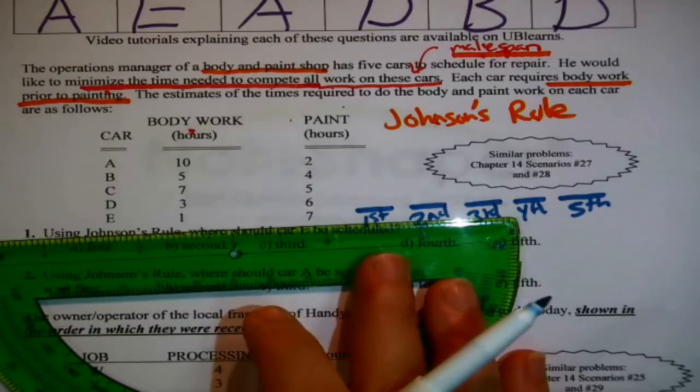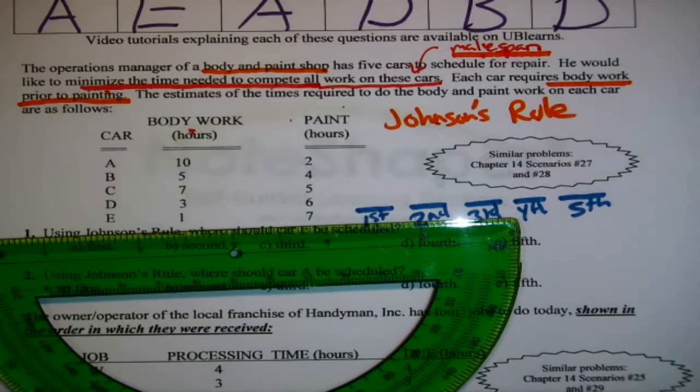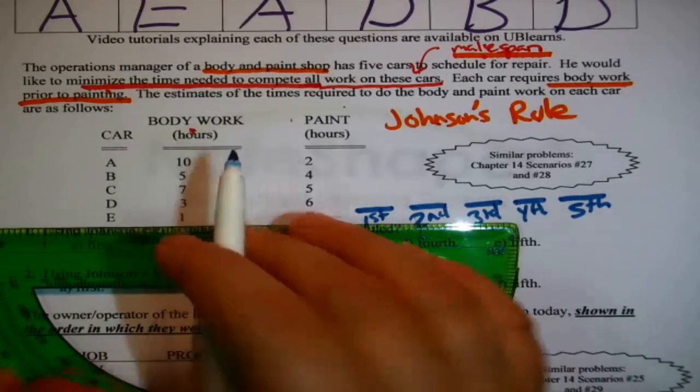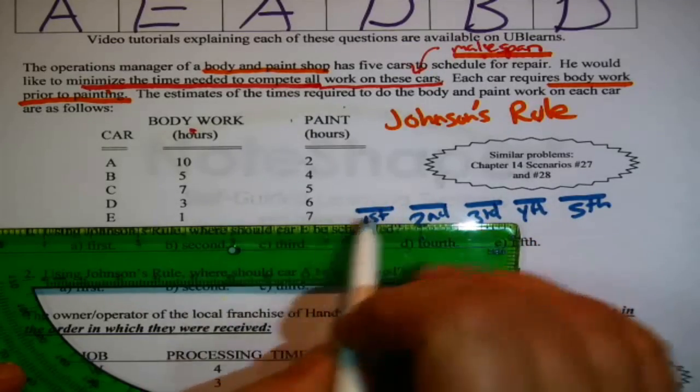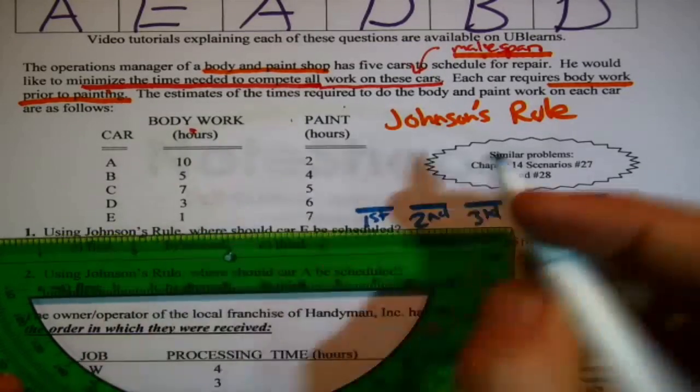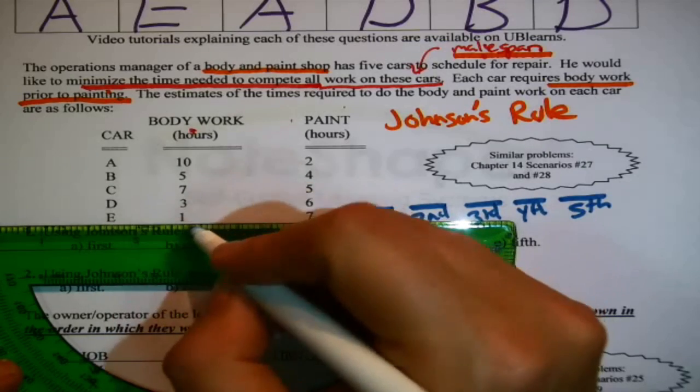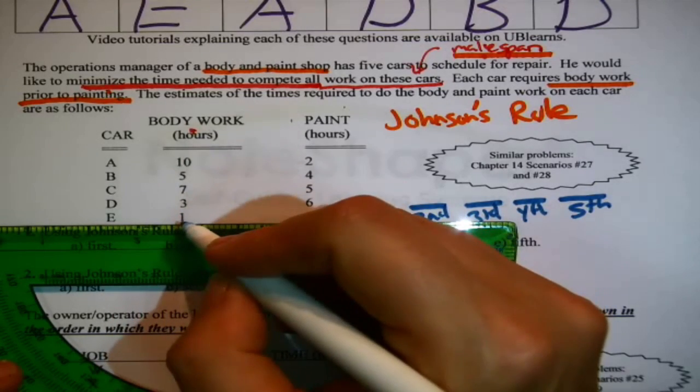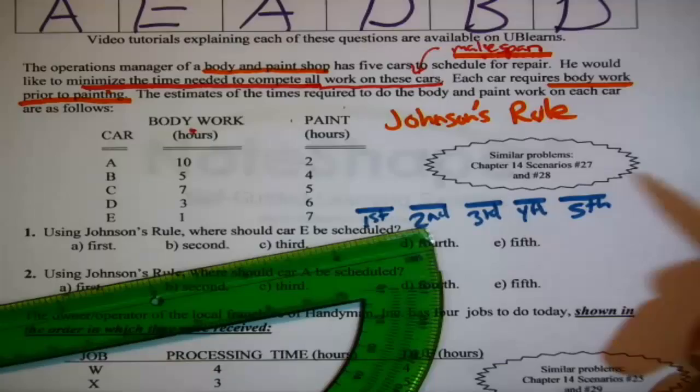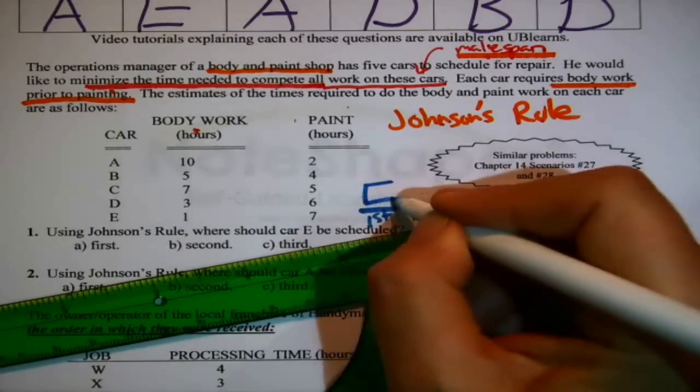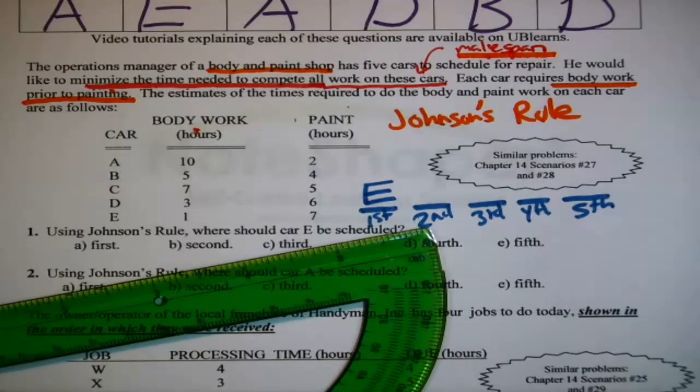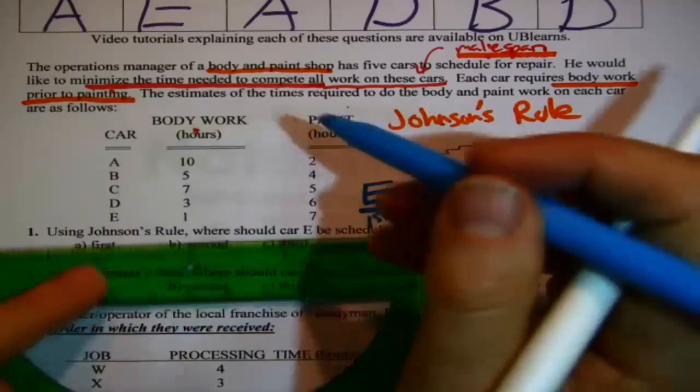Johnson's Rule, remember how it works? Look for the smallest number. I see a one there, it's the smallest of all of these numbers. What column? The first column, body work. That means that that car, that the one belongs to, that's E, goes as far to the front of the sequence as possible. There's nobody there right now, which means E goes right in front.